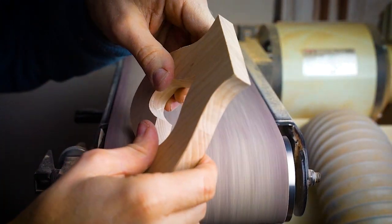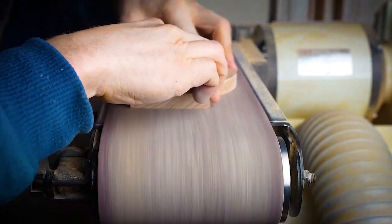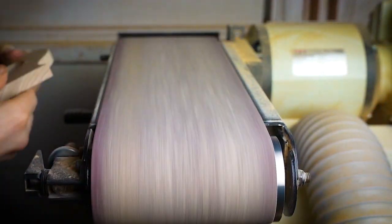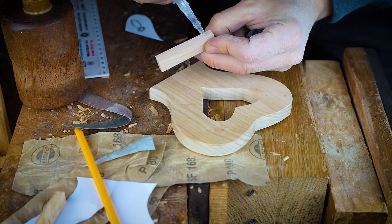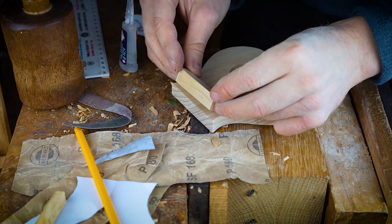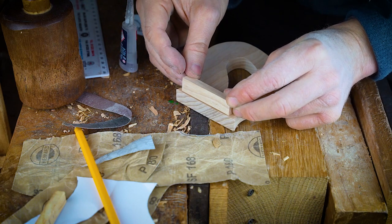Once we've done these parts we then move on to our belt sander to sand all the parts nice and smooth. If you haven't got access to a belt sander, hand sanding will suffice.